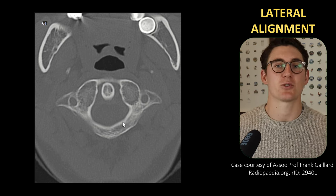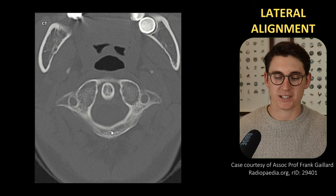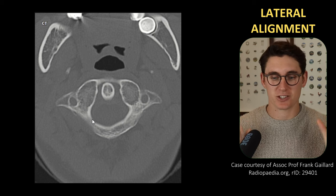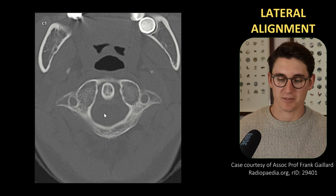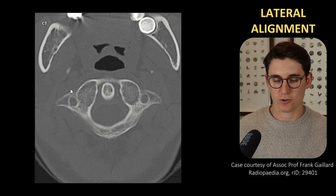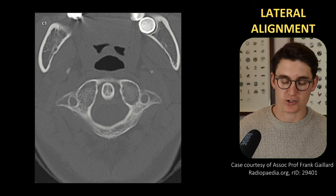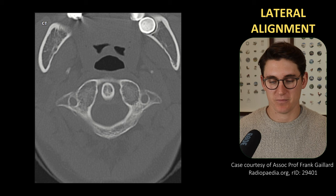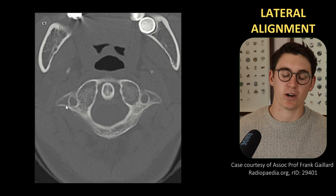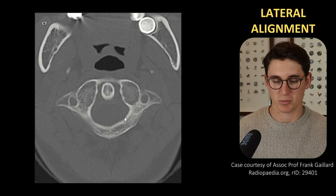C1 is called the atlas — like the Greek god holding the globe up — and that's exactly what it does. It sits at the base of the skull and articulates with the occipital bone around the foramen magnum region. You can see our anterior arch, the lateral bodies, and we've got transverse foramina that allow the vertebral arteries to go up into the base of the brain. The C1 transverse processes are actually quite large in comparison to some of the other cervical vertebrae.